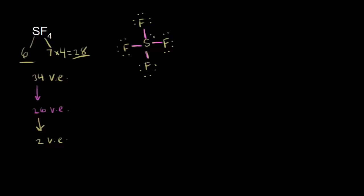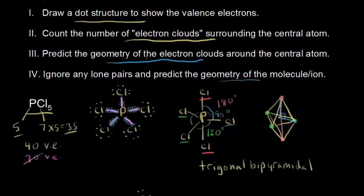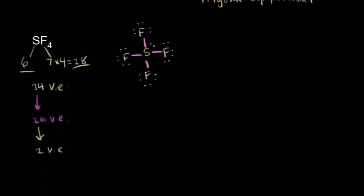Now we go to step 2 — the electron cloud step. How many electron clouds surround the central atom? We look at regions of electron density: each of the 4 S-F bonding pairs is one electron cloud, and the lone pair of electrons on sulfur is also a region of electron density surrounding the central atom. That lone pair counts as an electron cloud too. So we have 5 electron clouds — just like in the previous example.